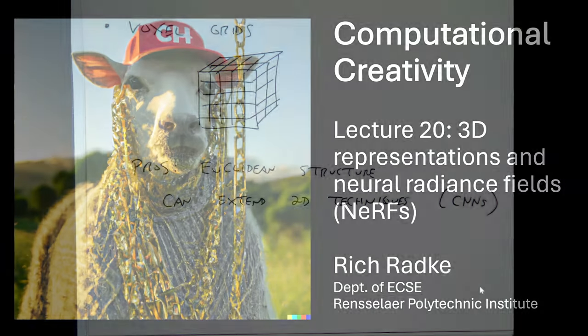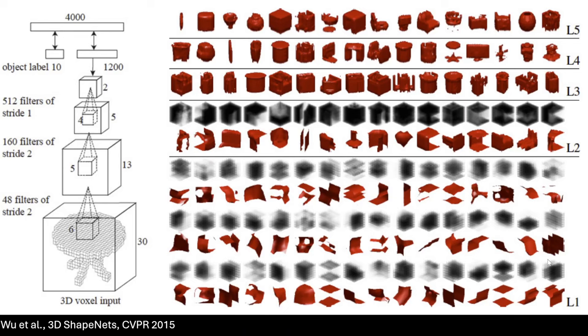One of the first attempts at doing something like this was called 3D ShapeNets, from 2015, before a lot of generative AI was happening, by Wu et al. This shows how you can take a 3D object and represent it with a series of 3D convolutional layers, with size and stride in not just two dimensions but three. That was used for a lot of 3D deep learning algorithms — not generative stuff, but just 3D deep learning.